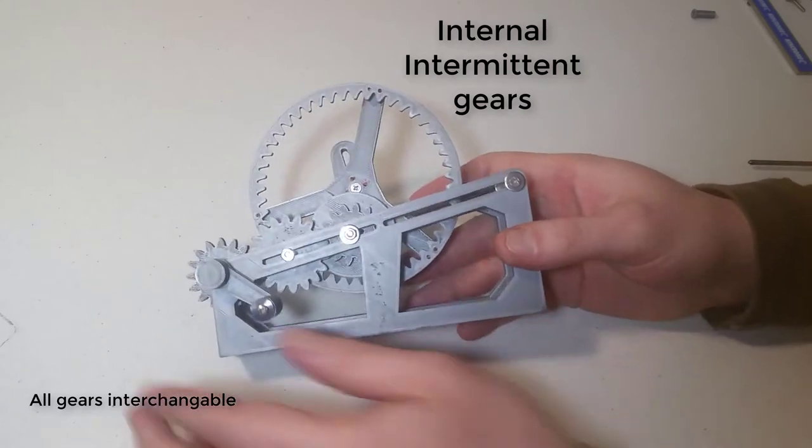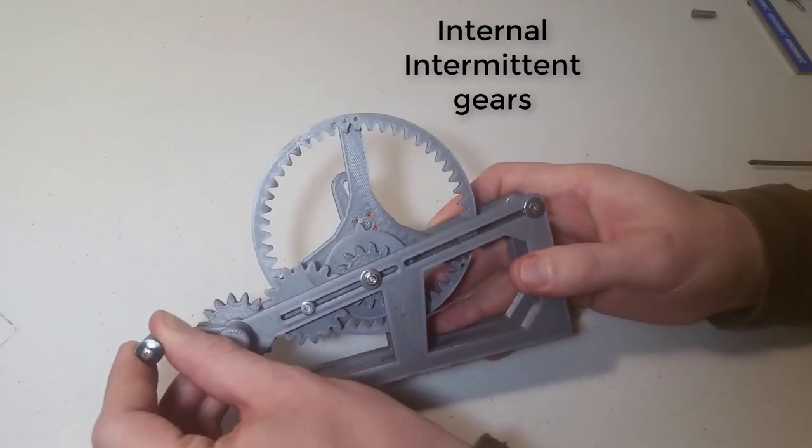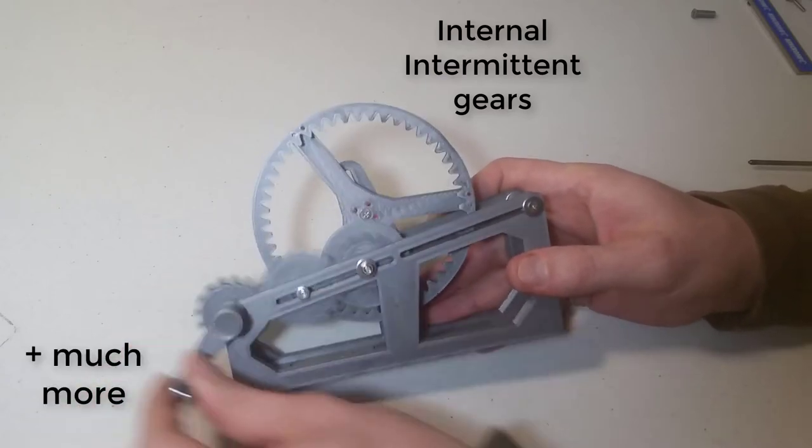In front of us we can see much of the exploration of just simply the spur gears. There are different types such as internal spur gears, intermittent spur gears, and different ratios so we can try different combinations.